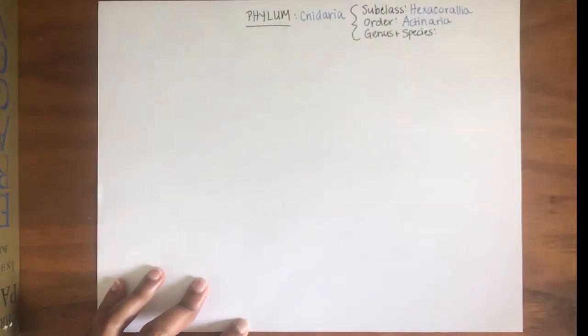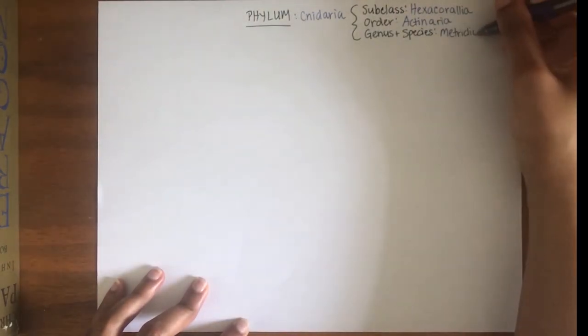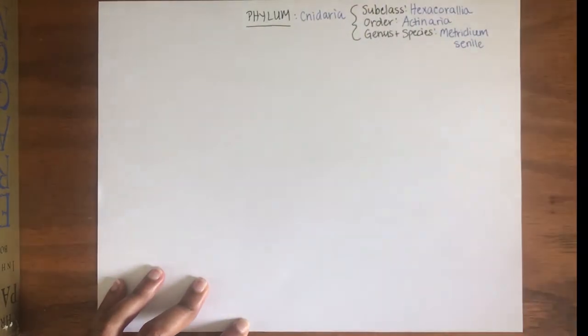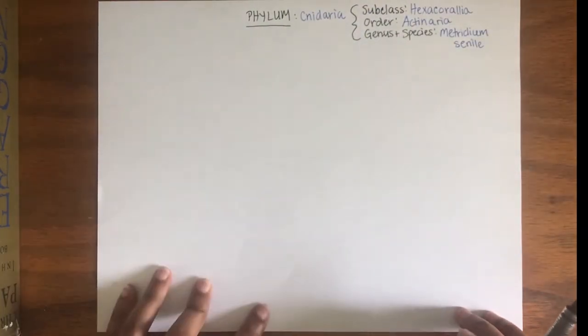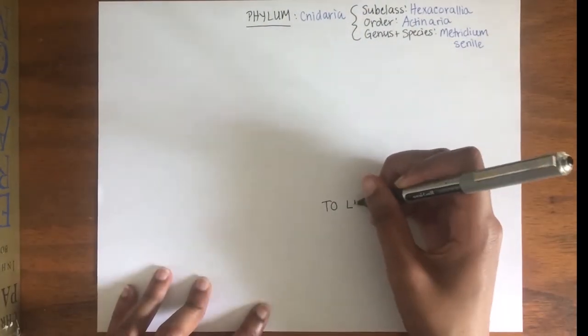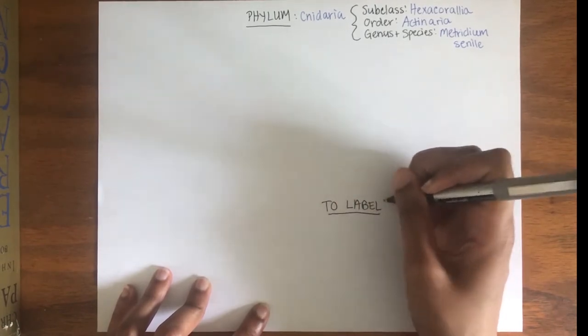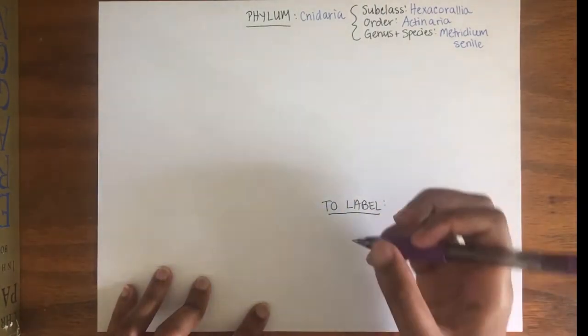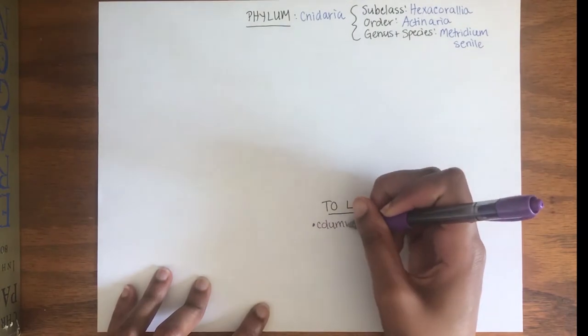are going to be focusing on today is metridium senile. This video will be going fairly in-depth into the internal anatomy of anemones. If you only want to draw the basic features, focus on the features labeled in purple, which